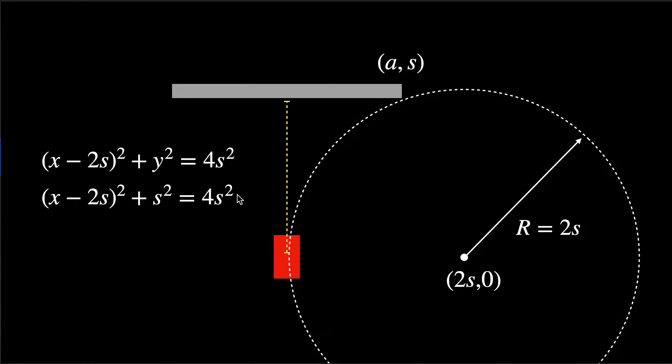Now I put in my y value of s, and I get s² right there. Then I can subtract s² from both sides and I get 3s². Now I can take the square root of both sides and solve for x, and I get x = √3·s + 2s. But really, that's plus or minus. When you take the square root, you get plus or minus. I made this mistake and it was kind of confusing for a little bit.